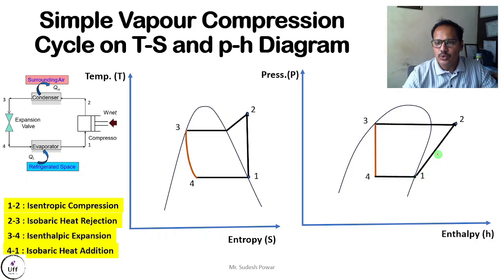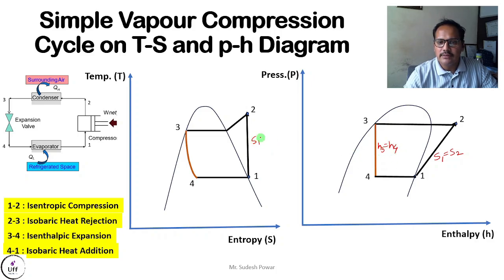Always remember these key relations: S1 equals S2, and H3 equals H4. Some numericals can be solved using the PH diagram directly. These two equations apply to both the TS and PH diagrams and are essential for solving problems on the vapor compression cycle.